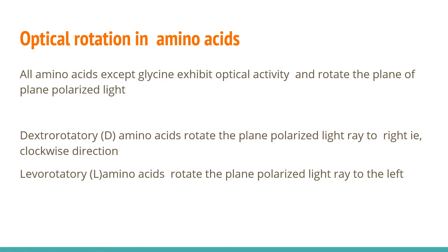That's why D amino acids and L amino acids will have different rotations of plane polarized light. All amino acids except glycine exhibit optical activity and rotate the plane of polarized light. If it rotates plane polarized light in the clockwise direction, that is a D amino acid, also called dextrorotatory.